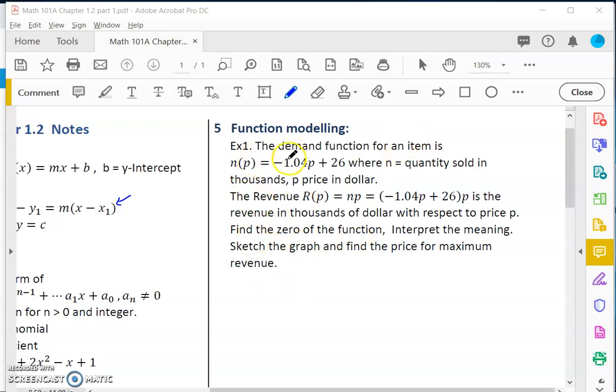This first example is an application of quadratic function in business where we analyze the revenue function in terms of price. We have this demand function which tells us how much will be demanded from customers at a certain price. This is the number of quantity that will be sold if you set a price like this.